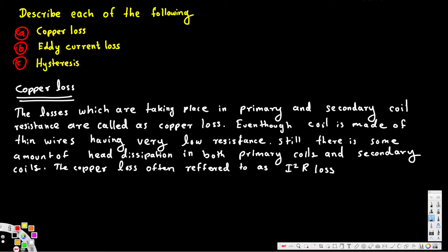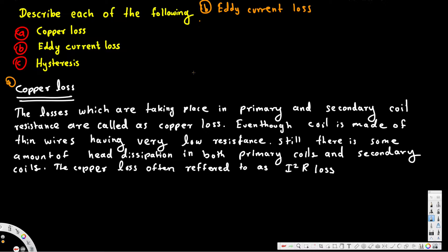Now let's see what eddy current loss is. The transformer's magnetic flux generates a current within the core called eddy current. As this eddy current passes through the iron core, the resistance of the iron core causes some amount of power dissipation in the form of heat.